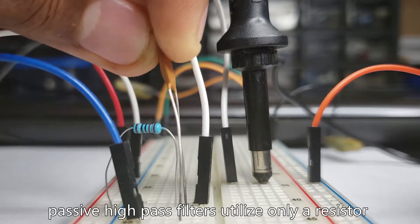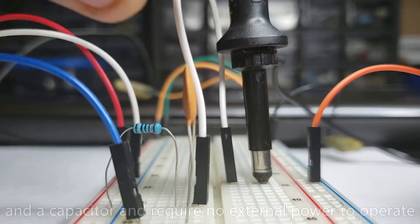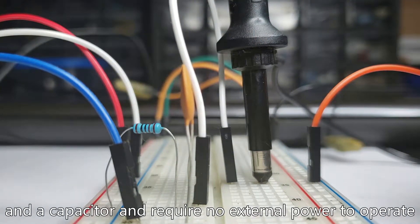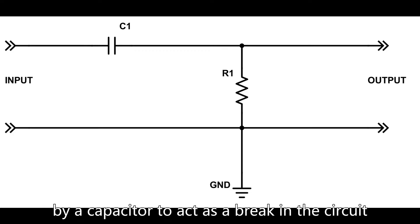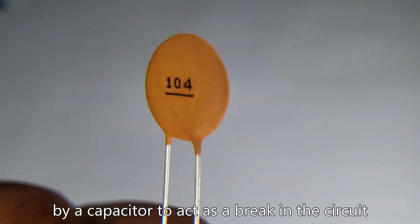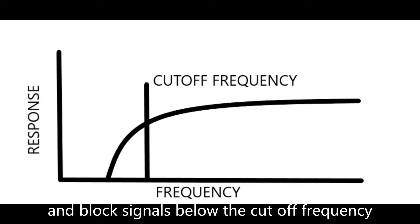Passive high pass filters utilize only a resistor and a capacitor and require no external power to operate. These passive filters depend on the reactance exhibited by a capacitor to act as a break in the circuit and block signals below the cutoff frequency.